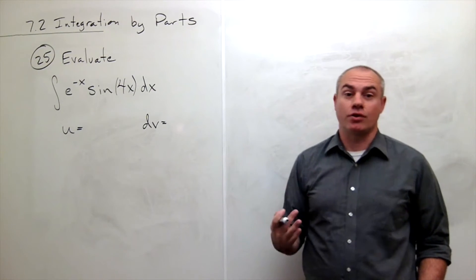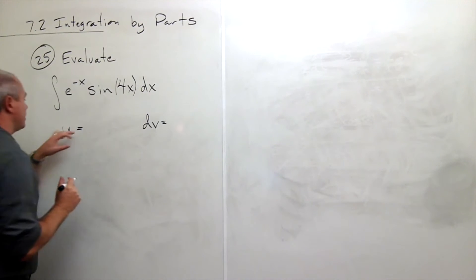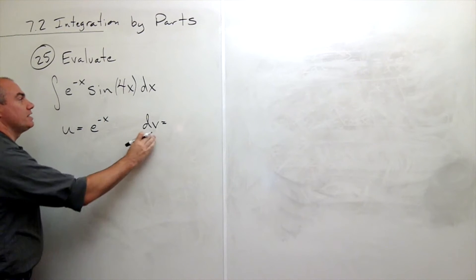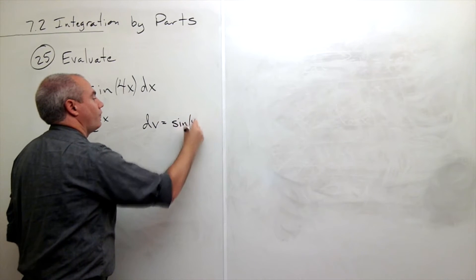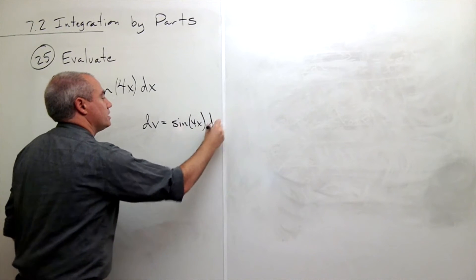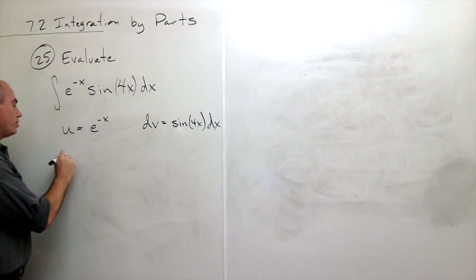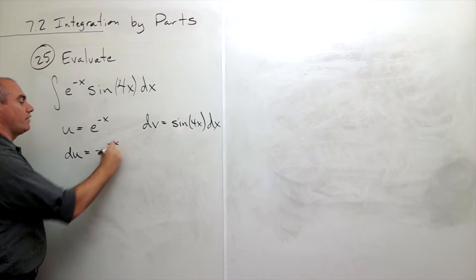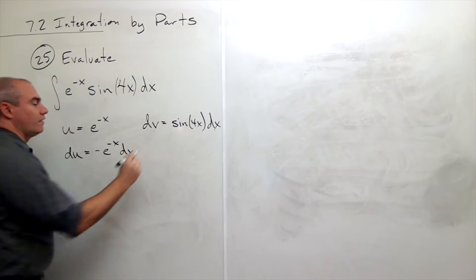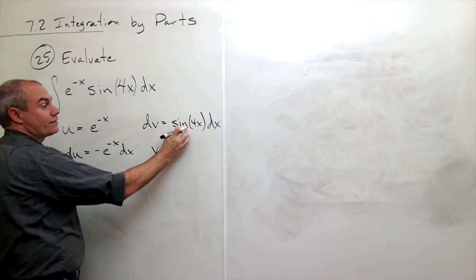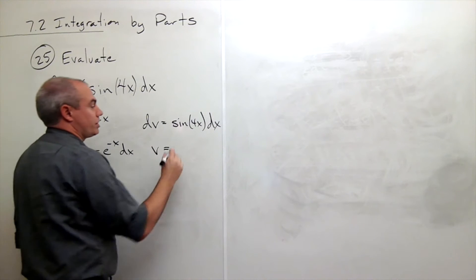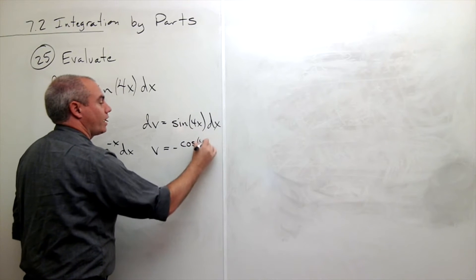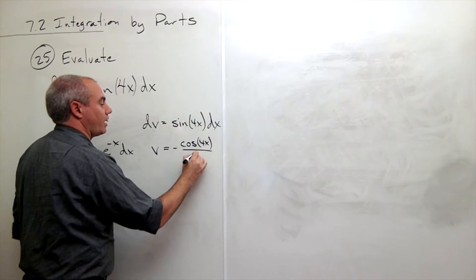So it's really my choice. I'm going to let u be e to the negative x and dv will be sine of 4x dx. So du, the derivative of u, will be negative e to the negative x dx, and v will be the anti-derivative of sine of 4x, which is negative cosine of 4x divided by 4.